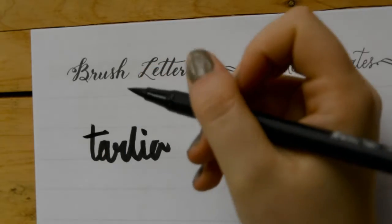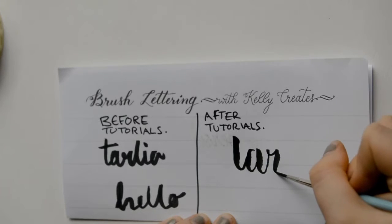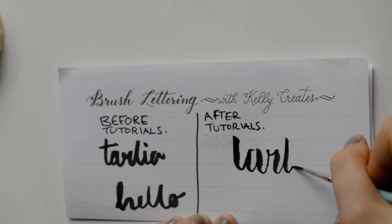Looking back on where I started to where I am now, I can see a difference in my writing, which was the goal. For me, the most effective way of learning was watching other people write and talk about their techniques and how they first learned how to do calligraphy. This is because I'm a very visual learner.